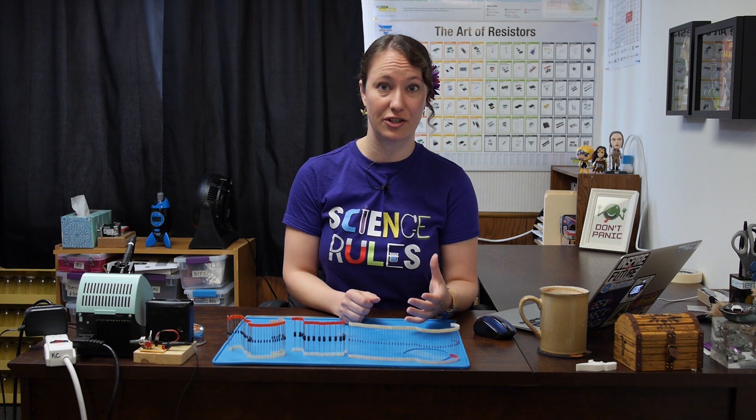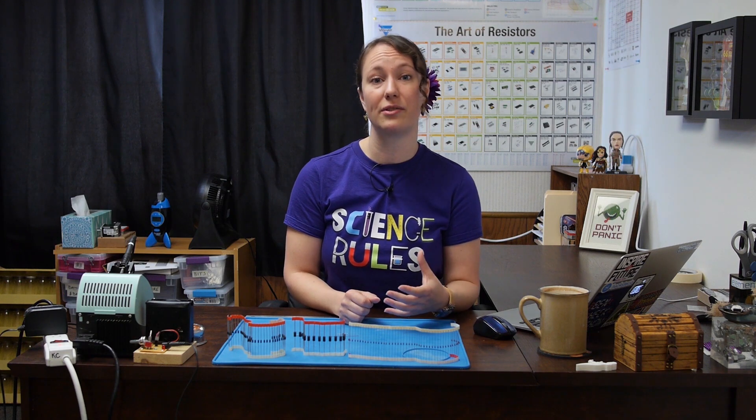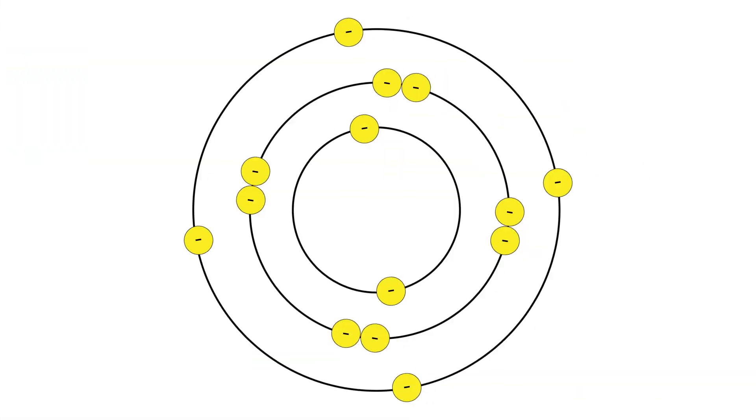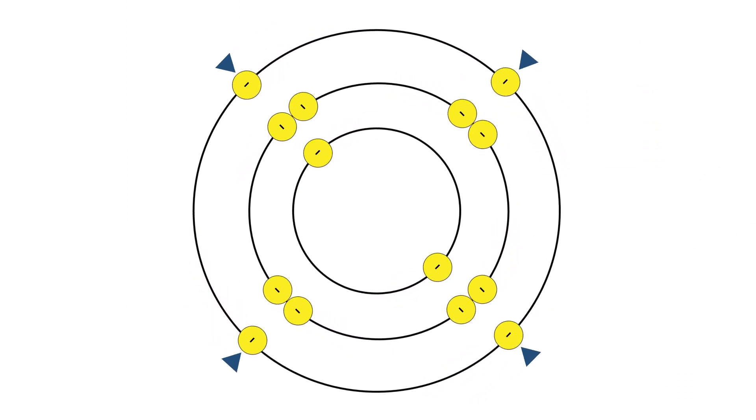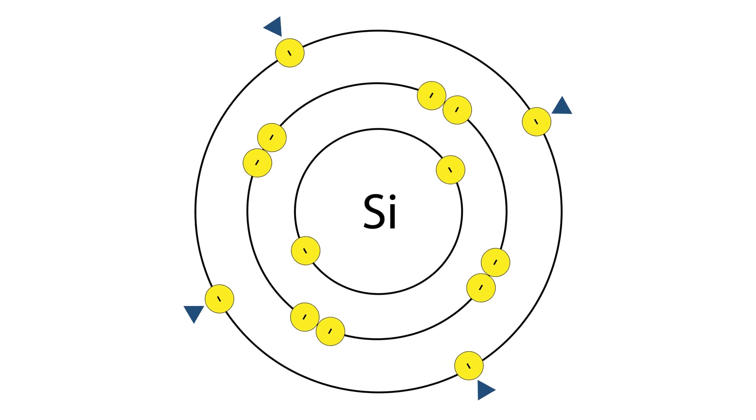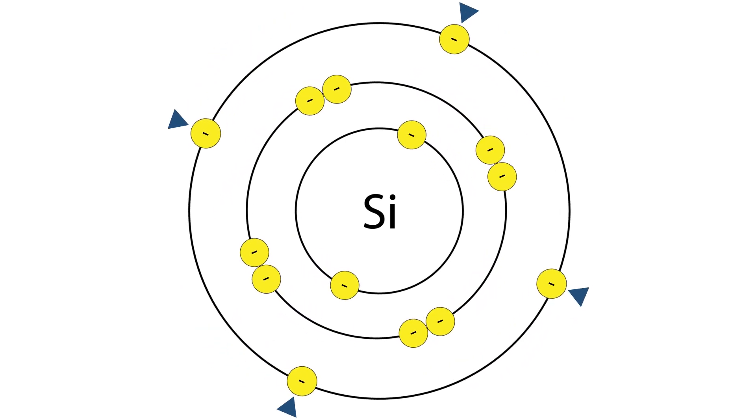Diodes are made with a semiconductor material. Today, most diodes are made with silicon, but sometimes other materials are used, such as germanium, selenium, or gallium arsenide. Semiconductors typically have four valence electrons in their outer shell. Silicon, being a semiconductor, also has four outer valence electrons.